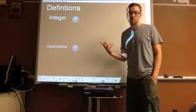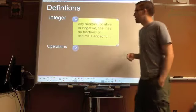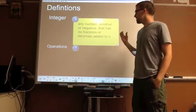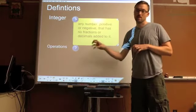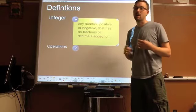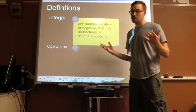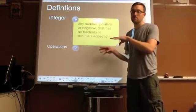Let's do definitions first. Integer - write these down too as you take notes along with this video. An integer is just any number, positive or negative, that has no fractions or decimals added to it. An integer would be 7. An integer would not be 7.5 or 7 and a half. An integer could also be negative 7, but not negative 7.5 or negative 7 and a half.